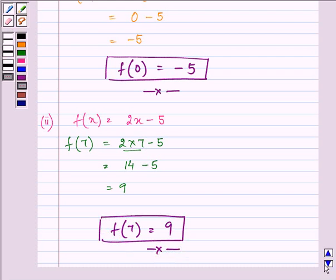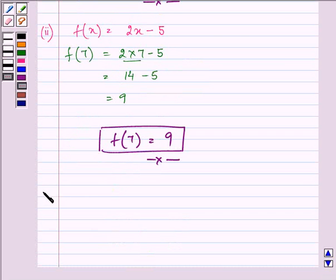Proceeding on with the third part. We need to find f(-3), so f(x) is given to us as 2x - 5.